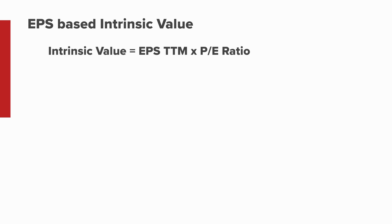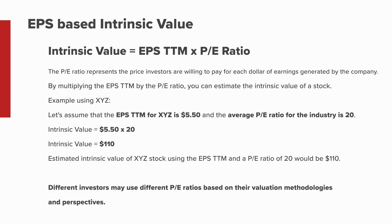One commonly used formula is the price-to-earnings ratio approach to estimate intrinsic value. Intrinsic value equals earnings per share for the trailing 12 months multiplied by the price-to-earnings ratio. The PE ratio represents the price investors are willing to pay for each dollar of earnings generated by the company. Using company XYZ, assuming EPS TTM of $5.50 and an average PE ratio for the industry of 20, the intrinsic value equals $5.50 multiplied by 20, giving an estimated intrinsic value of $110.